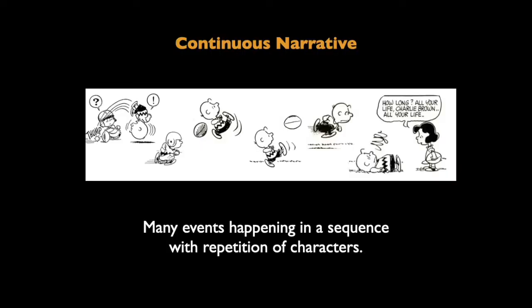A continuous narrative is like a progressive narrative, but now you have a repetition of characters. It's a long event with many different separate scenes or events — episodes. Here we see Charlie Brown on the left failing to kick the ball, practicing and working to get better at kicking balls, running and getting all ready for it, and inevitably continuing to fail to kick the ball. And Lucy chides him — this is something that's going to be his problem for the rest of his life.